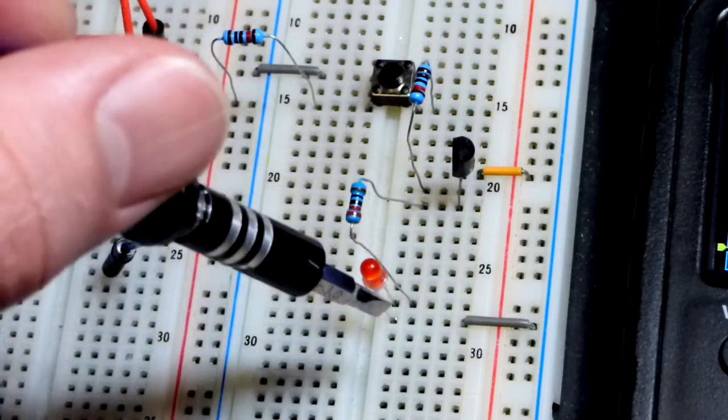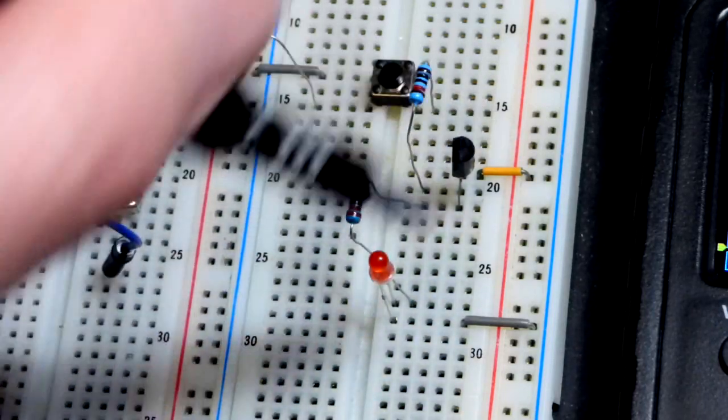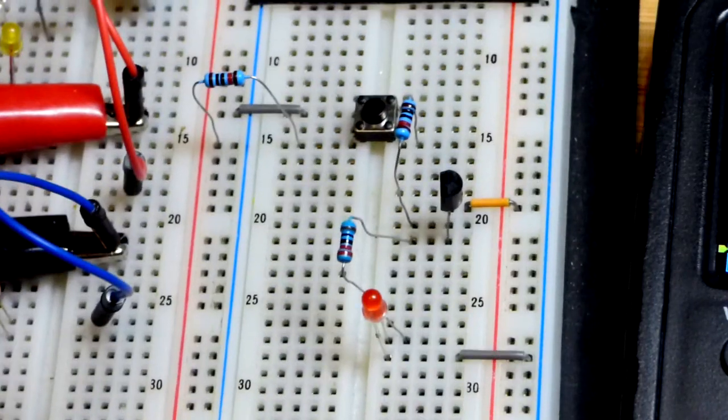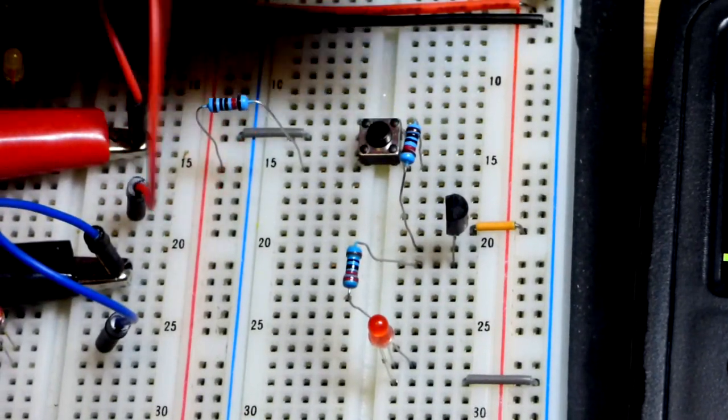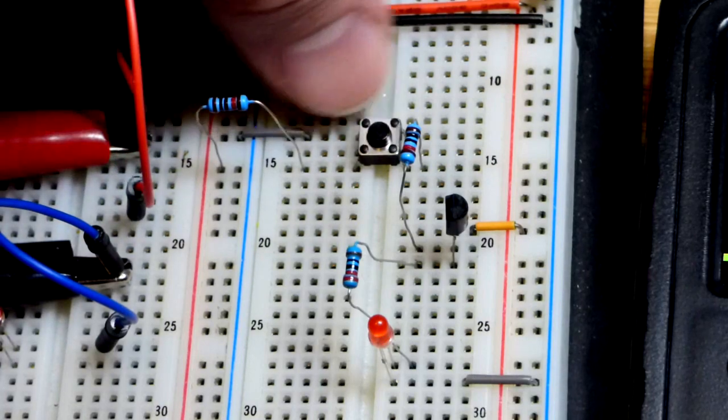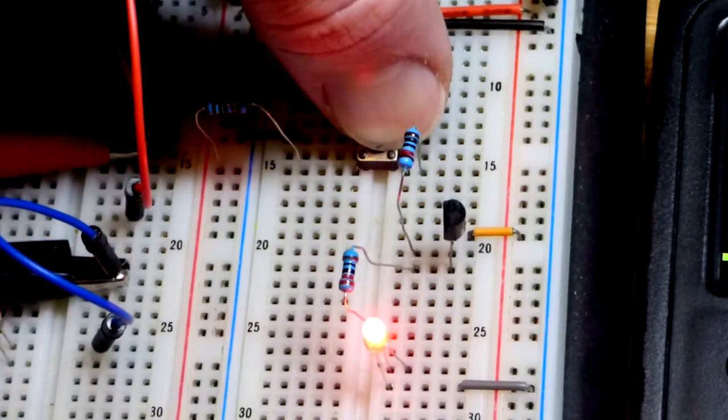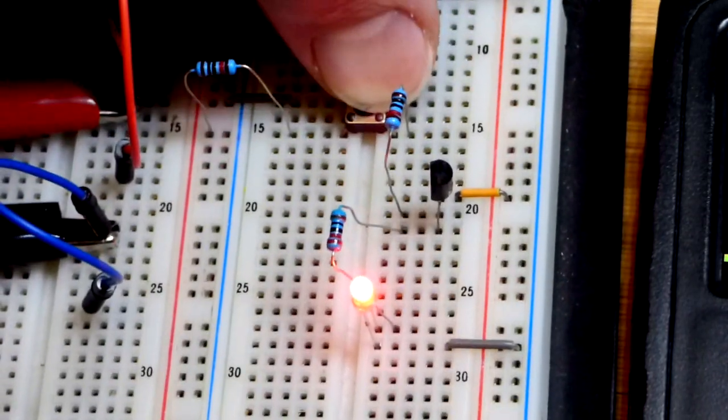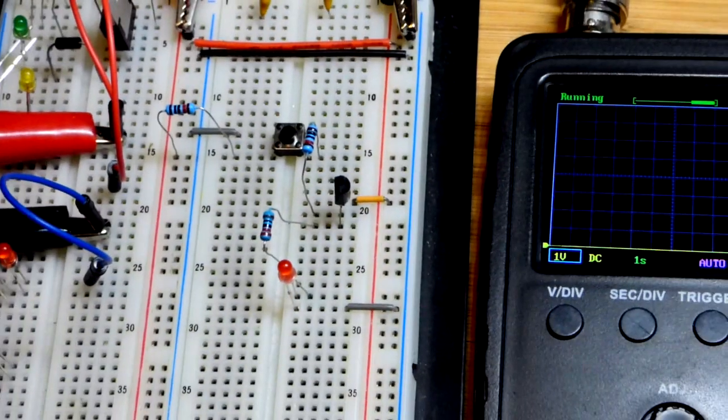And down here is a 220 ohm resistor to protect the LED from my five volts across it when the transistor is on. Right now the transistor is off. If I press this button we'll have a direct connection to ground there and the LED is on right there. Pretty straightforward.